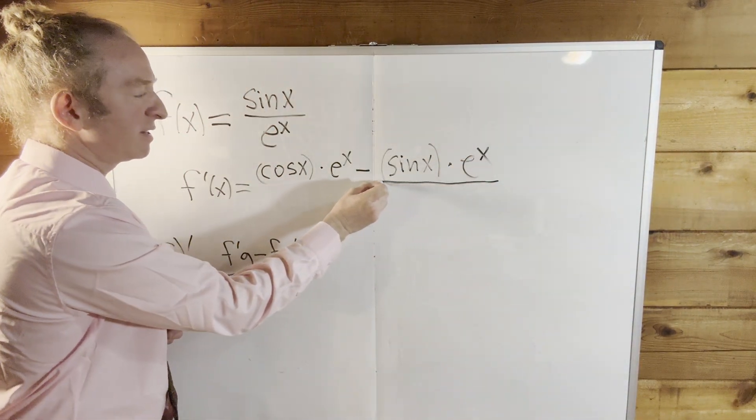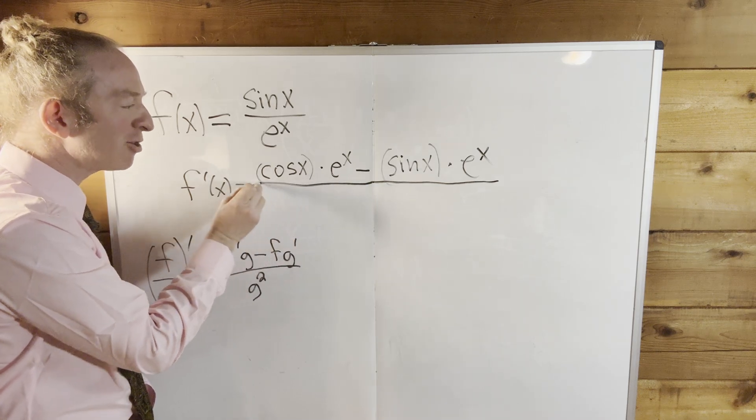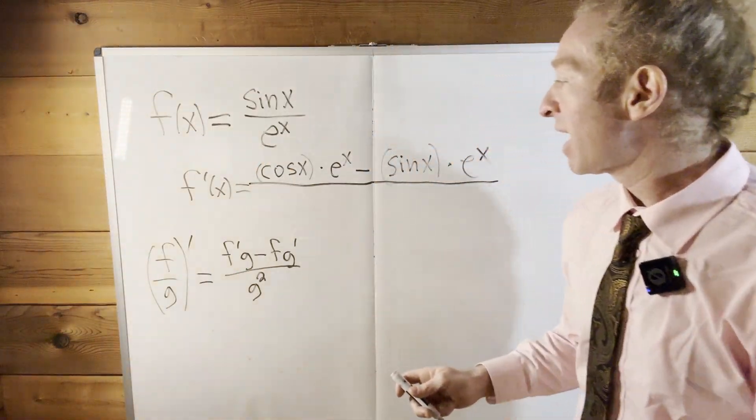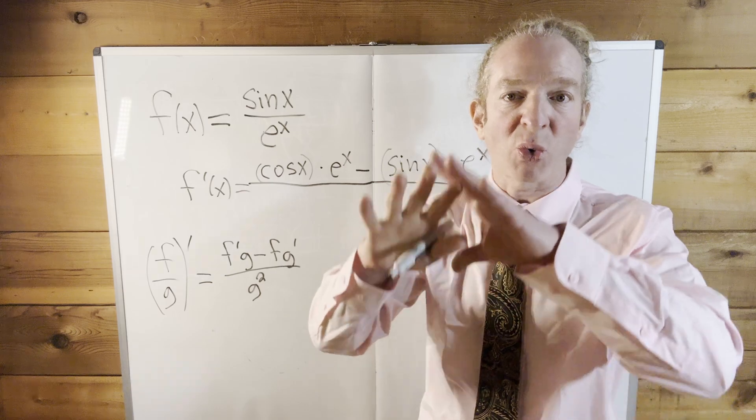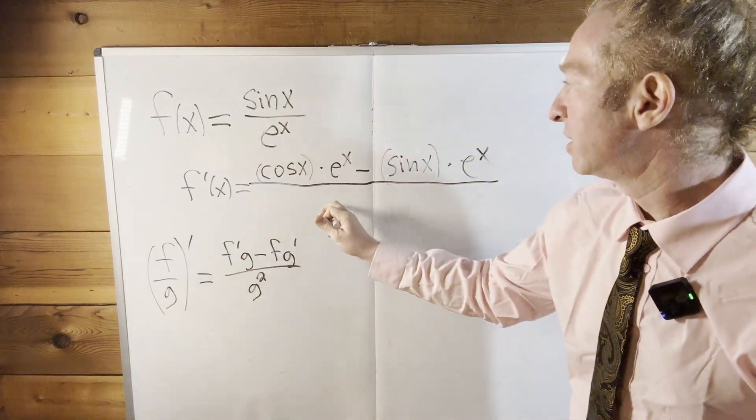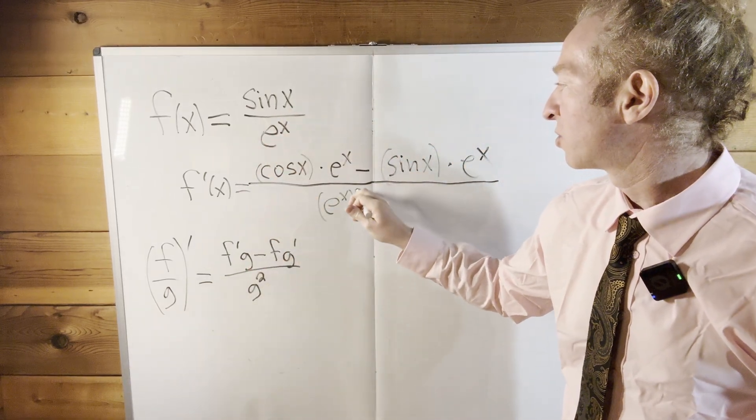All of this is being divided, this entire creature is being divided by the bottom one squared. So e to the x quantity squared. So like this, e to the x squared.